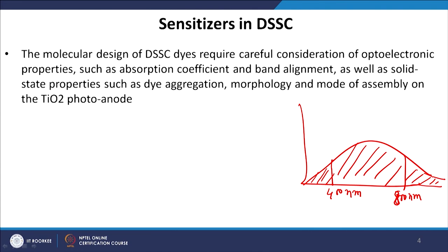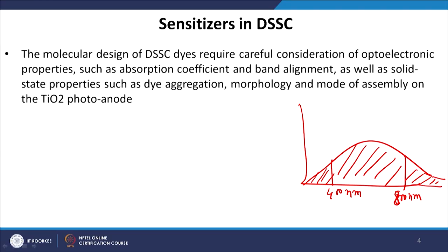The second point is absorption coefficient and band alignment. The dye must be able to inject electrons into the conduction band of the n-type semiconductor, so the energetics of the semiconductor and sensitizer must be kept in mind. Third, some dye molecules tend to show aggregation — they accumulate in a particular area, meaning only those regions absorb light while the rest of the TiO2 area cannot absorb sunlight. We do not want dye molecules to aggregate in one place.